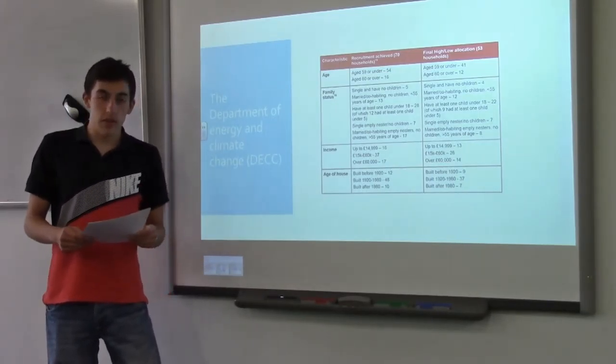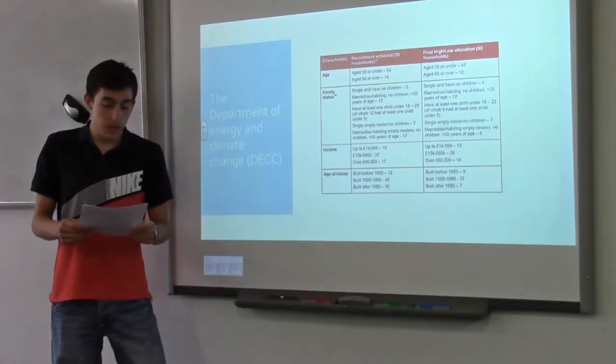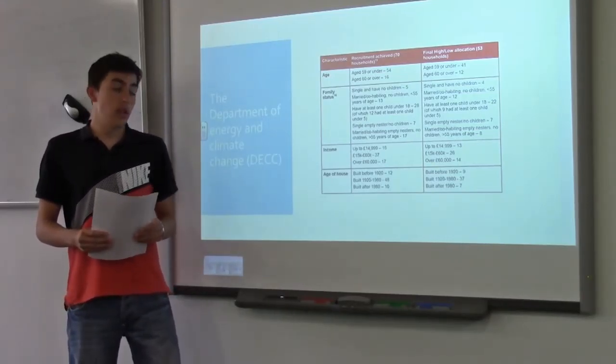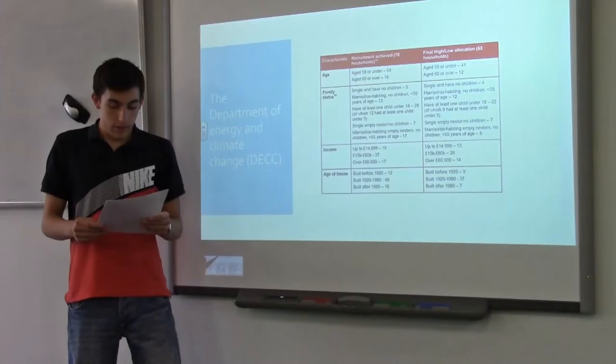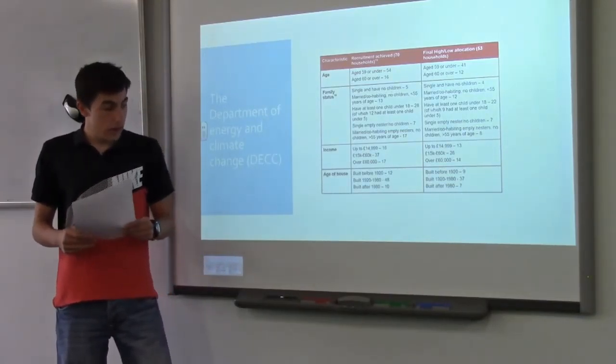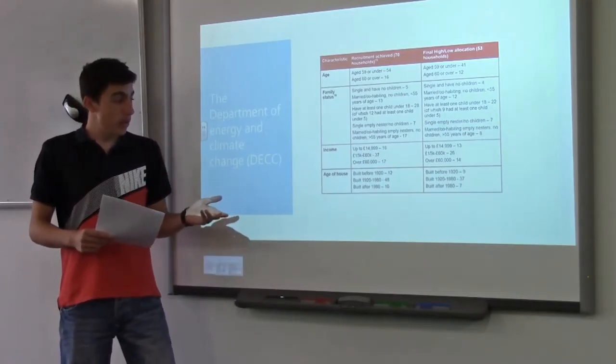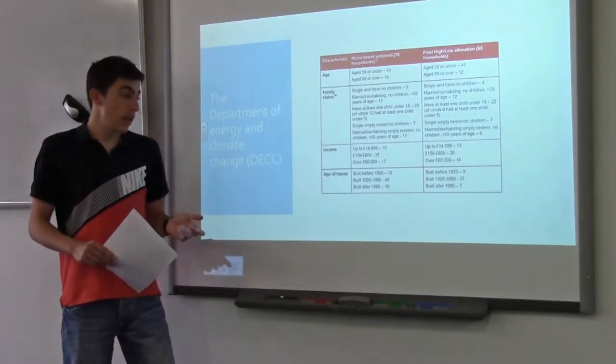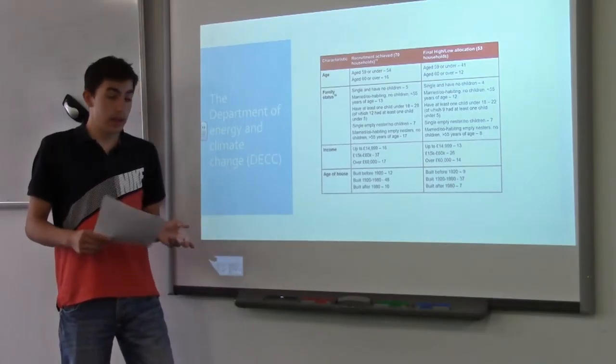The initial categorisation involved four factors: the age of the householders, their family status, the income and the age of the property. In terms of the property itself, the age of the house would be noted and be grouped in one of three sections, either built before 1920, between 1920 and 1980, and built after 1980.